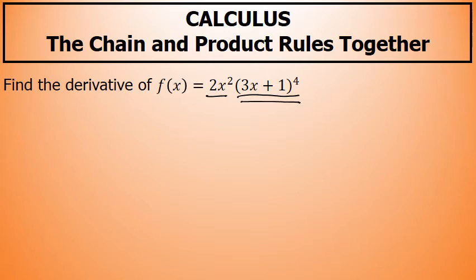However, it's worth noting that the second factor will require the chain rule. The second factor, 3x plus 1 to the fourth power, will require the chain rule.